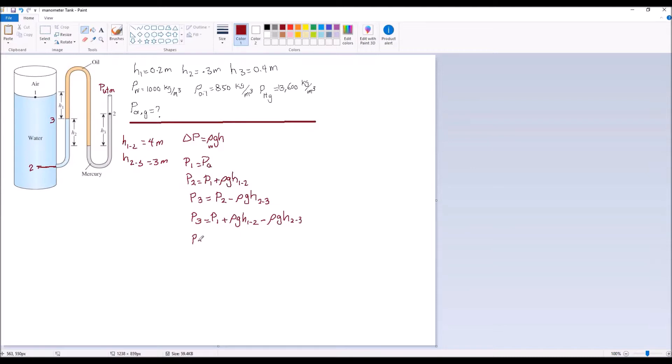So we can rearrange this to show P3 is P1 plus, let's factor rho G because it's constant. Then we have H from 1 to 2 minus H from 2 to 3. Let's look at here. H from 1 to 2 minus H from 2 to 3 is H from 1 to 3.